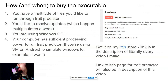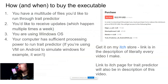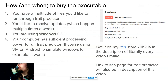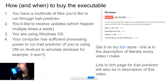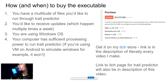How and when should you buy the executable? If you have an unlimited number of files you'd like to run through Trade Predictor, or if you'd like to receive updates which happen multiple times a week, or if you are using Windows operating system, or if your computer has sufficient processing power to run Trade Predictor — if those four criteria you meet, then you should probably buy the executable instead of buying the reports. However, if you are on macOS, for example, you cannot use the executable, so in that case you should buy the report.